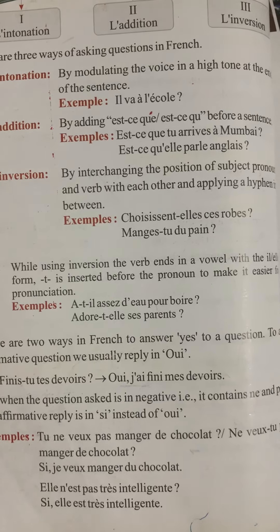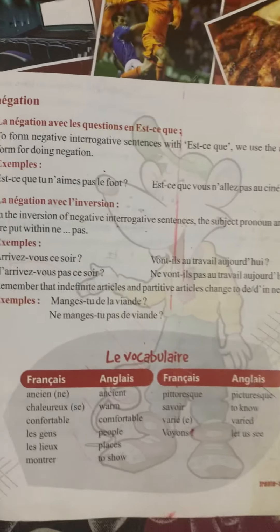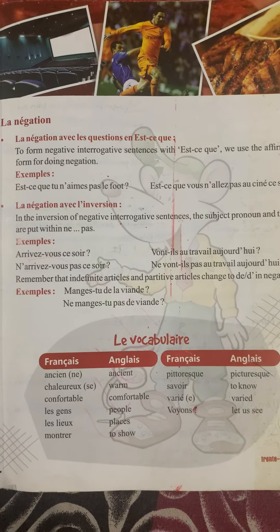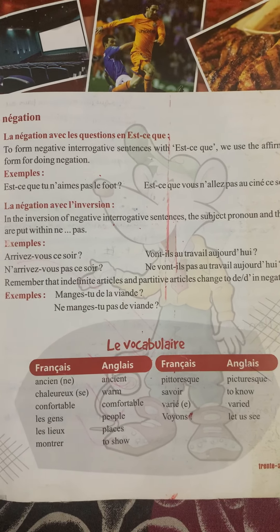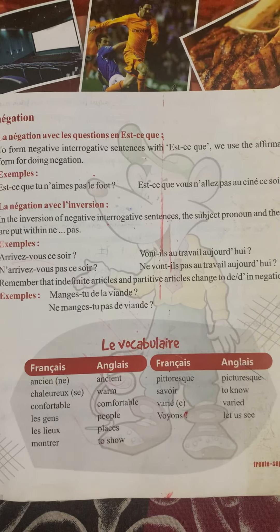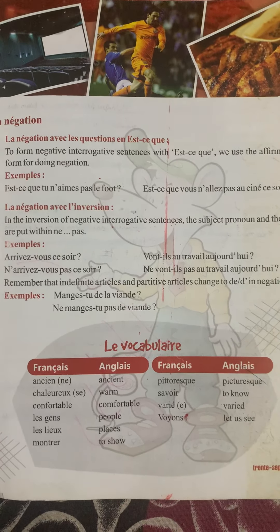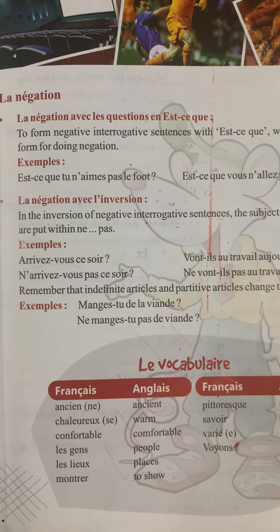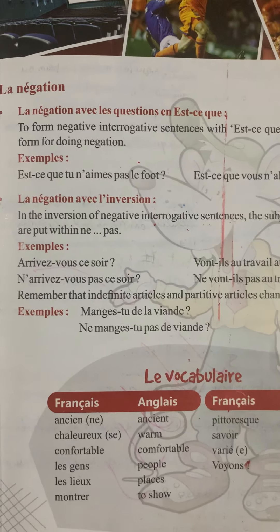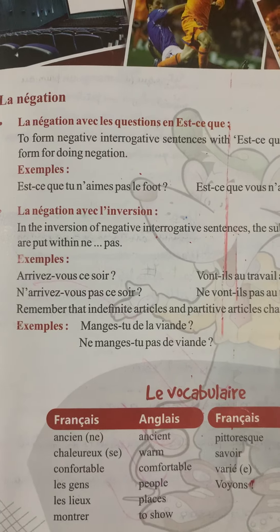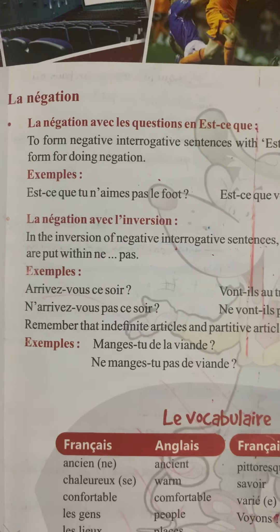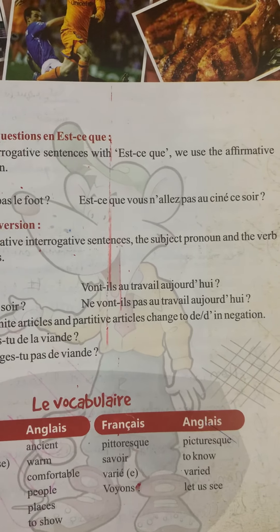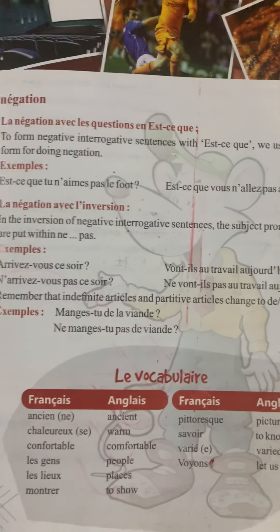'Elle n'est pas très intelligente?' — 'She is not very intelligent?' Answer: 'Si, elle est très intelligente' — 'Of course, she is intelligent.' To form negative interrogation with est-ce que, we use the affirmative form and add negation. Example: 'Est-ce que tu n'aimes pas le foot?' — 'n'' apostrophe is used before the verb starting with a vowel. Another example: 'Est-ce que vous n'allez pas au cinéma ce soir?' meaning 'Are you not going to the movie this evening?'